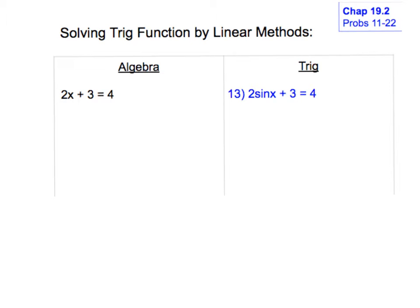We're going to do a comparison of an algebra problem versus a trig problem. Problem 13 from chapter 19.2 is 2 sine x plus 3 equals 4. First, I'll show a similar algebra problem using the same numbers: 2x plus 3 equals 4. In algebra, you'd subtract the 3, giving 2x equals 1, then divide by 2, so x equals 1/2.